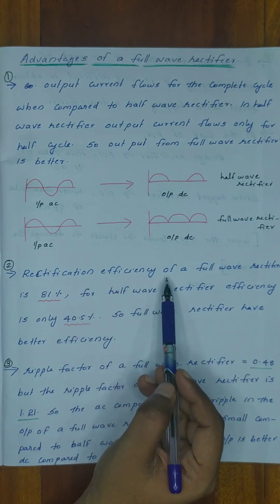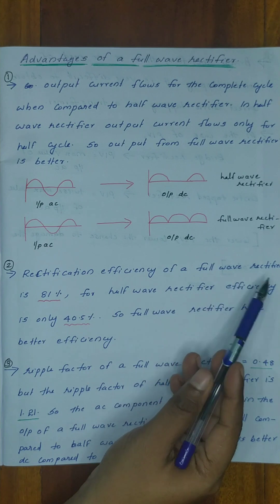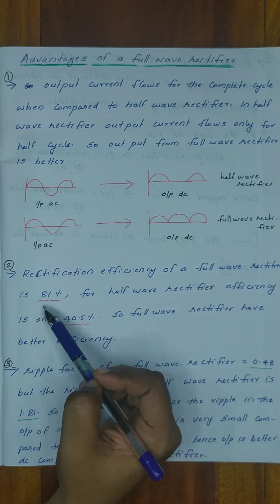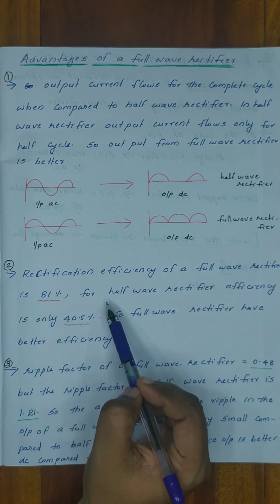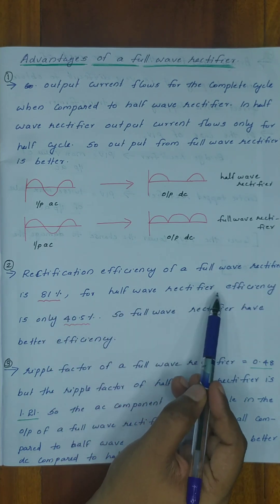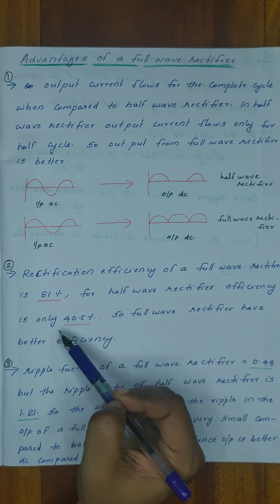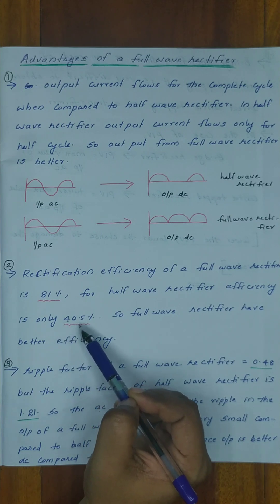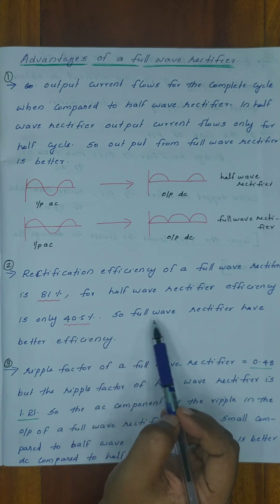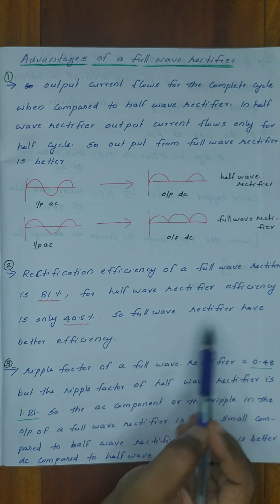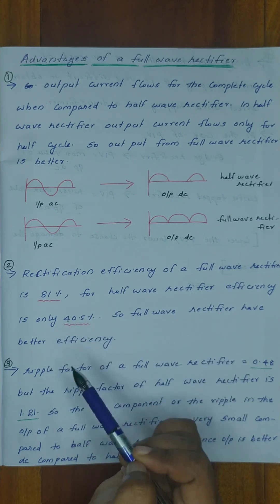The second advantage: the rectification efficiency of a full wave rectifier is 81%. For a half wave rectifier, the efficiency is only 40.5%. So a full wave rectifier has better efficiency.